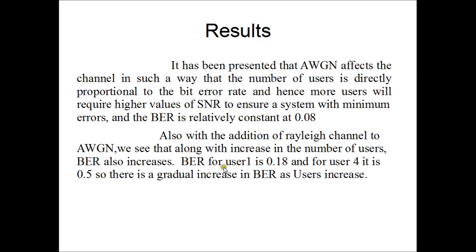And it confirms that the BER for user 1 was at 0.18 and for user 4 it is at 0.5. And it goes on increasing to factors of 0.8 and 0.9 as we employ more and more users. These are the results we have derived from the simulation of MCCDMA for Rayleigh and AWGN systems.